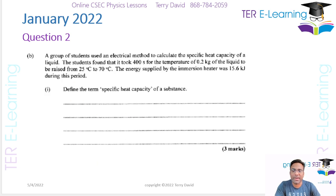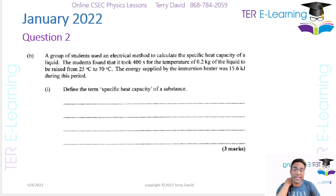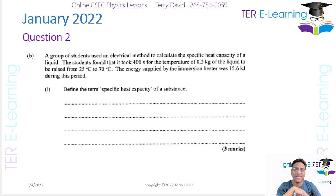The next part: a group of students used an electrical method to calculate the specific heat capacity of a liquid. They found that it took 400 seconds for the temperature of 0.2 kilograms of the liquid to be raised from 25 to 70 degrees Celsius. The energy supplied by the immersion heater was 15.6 kilojoules during this period.